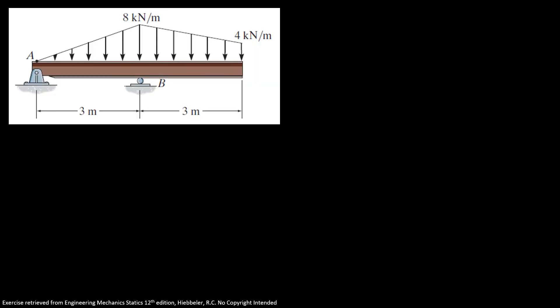Now we're gonna position our loads. So here I have P₁ measuring from A — this distance is equal to 1 meter. Our equivalent load is equal to 12 kN. Our second load is at 1/3, so here it is — 6 kN — and my distance is 1 meter from B. And here I have another 12 kN for load 3, measured 1.5 meters from B.